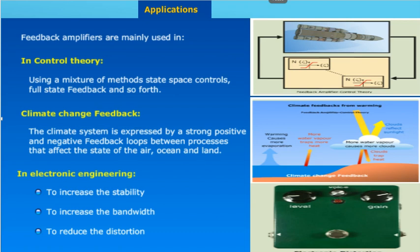Applications of your negative feedback amplifier: feedback amplifiers are mainly used in control theory, using methods like state space control and full state feedback. The climate system is expressed as strong positive and negative feedback loops between processes that affect the state of the air, ocean and the land. Negative feedback amplifiers are also used in electronic engineering to increase stability, increase bandwidth, and reduce distortion.